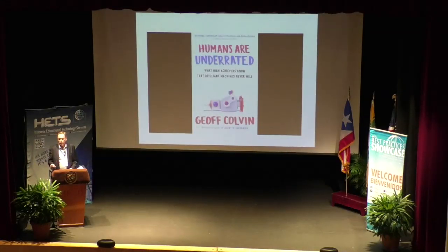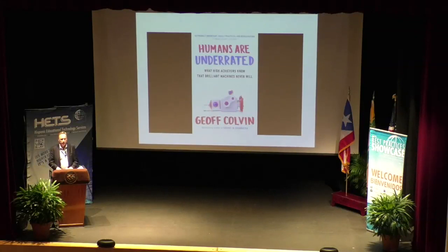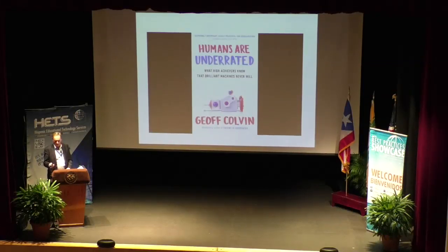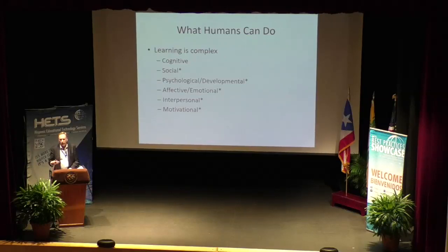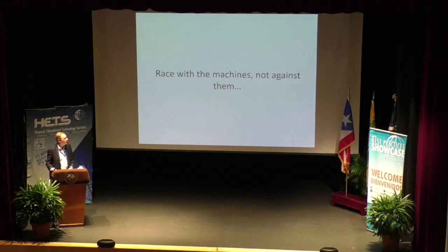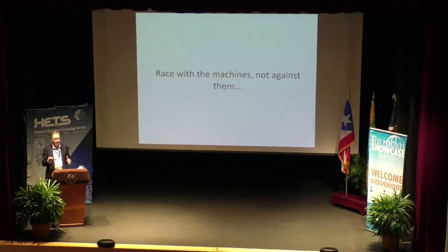There's been some interesting other work. Humans Are Underrated by Geoff Colvin is an interesting one — he talks about what humans can do that machines can't do. And this gets back to what I want to say about teaching and learning in online settings. Colvin talks about learning being a complex human ability — cognitive, social, psychological, developmental, affective. There are certain domains in which humans can outperform machines. Brynjolfsson and McAfee give us this insight: we should be racing with machines, not against machines.